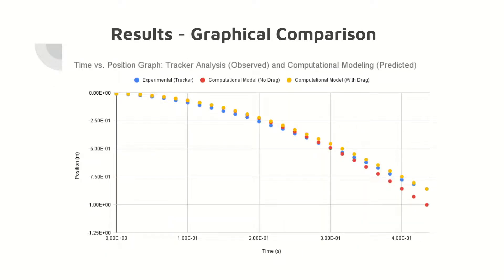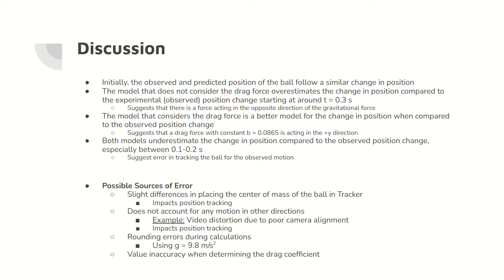Here are the graphical results of the experiment, shown as a position versus time graph where the position is measured in meters from the origin and time in seconds. The blue data points are for the experimental model, the red data points are for the computational model without the drag force, and the yellow data points are the model with the drag force. The overestimation of the change in position by the computational model without the drag force suggests that there is a force acting against the downward motion of the ball. The model that considers the drag force is a much better model for the motion of the ball and suggests that there is a drag force affecting the ball's motion.